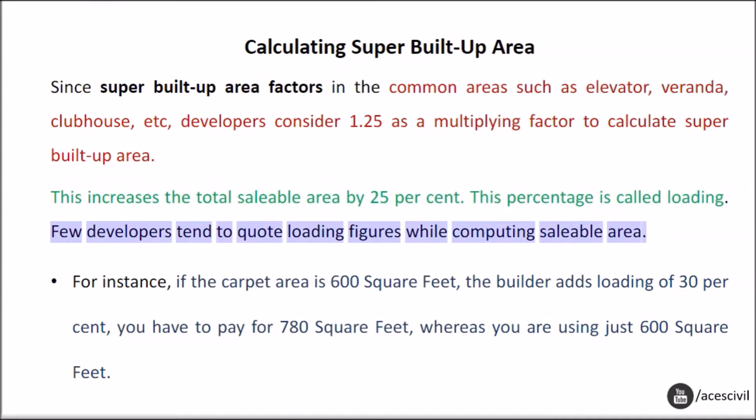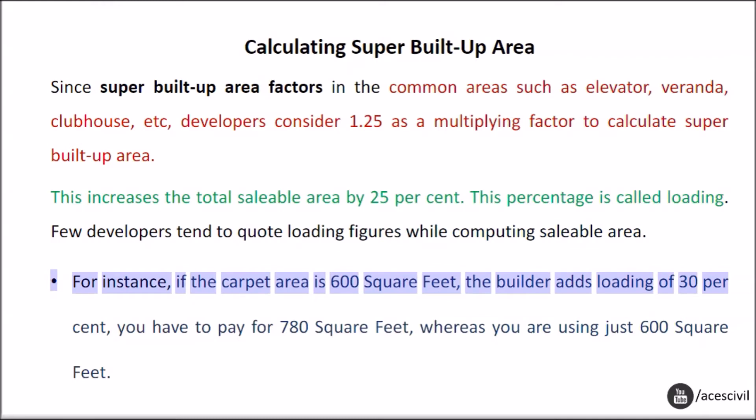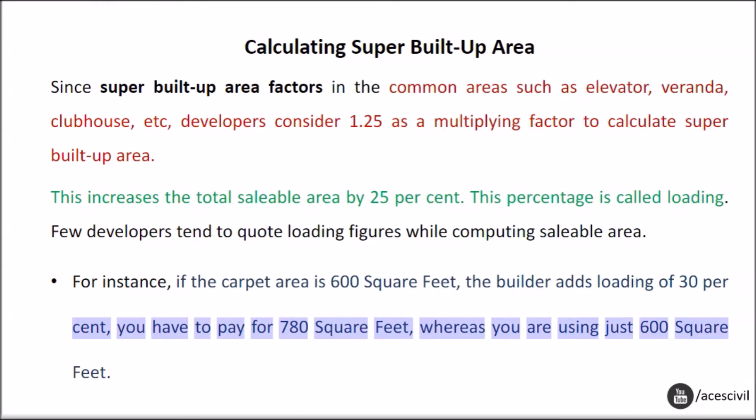Few developers tend to quote loading figures while computing saleable area. For instance, if the carpet area is 600 square feet and the builder adds a loading of 30%, you have to pay for 780 square feet, whereas you are using just 600 square feet.